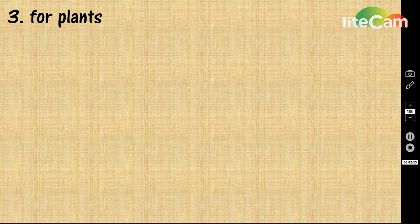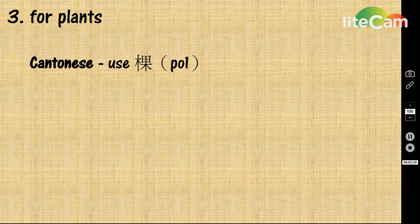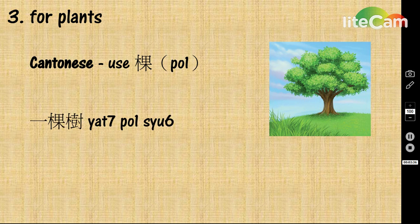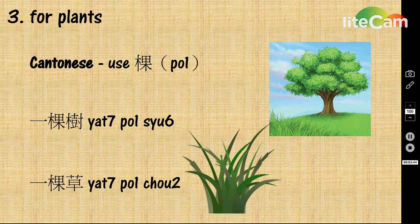For plants, we will also use the word 棵 as the quantifier. For example, 一棵樹 means a tree, and 一棵草 means grass.